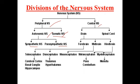The somatic nervous system consists of both motor and sensory nerves. The central nervous system is divided into the brain and spinal cord. The brain is divided into forebrain, midbrain, and hindbrain. Forebrain is divided into telencephalon and diencephalon. Midbrain contains only mesencephalon. Hindbrain is divided into metencephalon and myelencephalon.